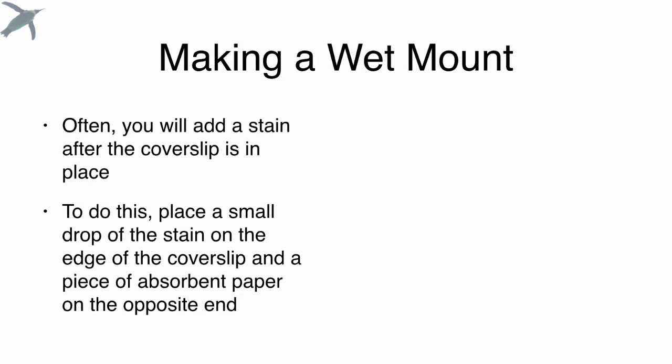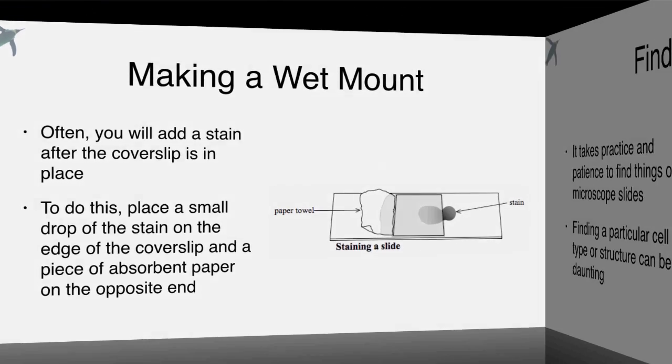Often you add the stain after the cover slip is in place. To do that, you just add a drop of the stain at the edge where the cover slip and the slide meet. Then you place an absorbent material, you can use a paper towel or a Kimwipe at the opposite end, and it will wick the fluid and draw the stain across the specimen. It's a really nice way of evenly distributing the stain across the slide.